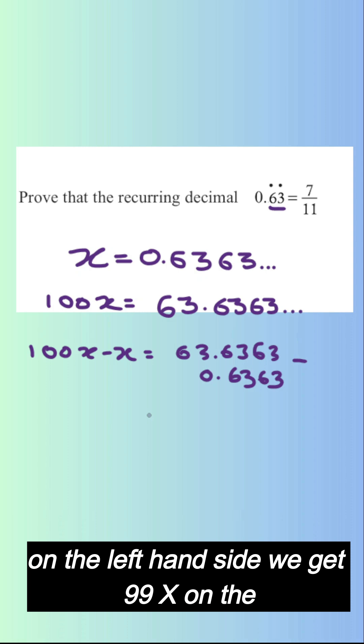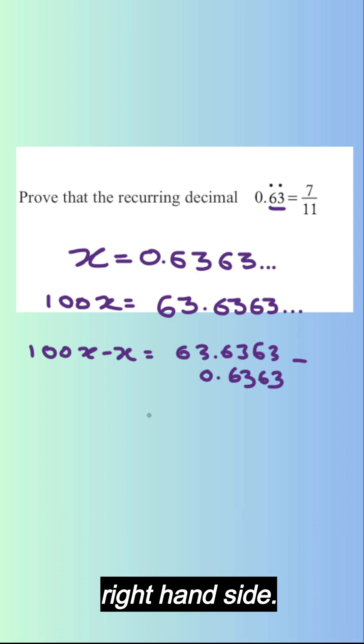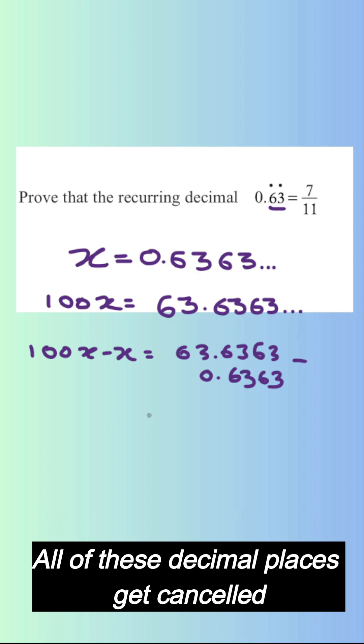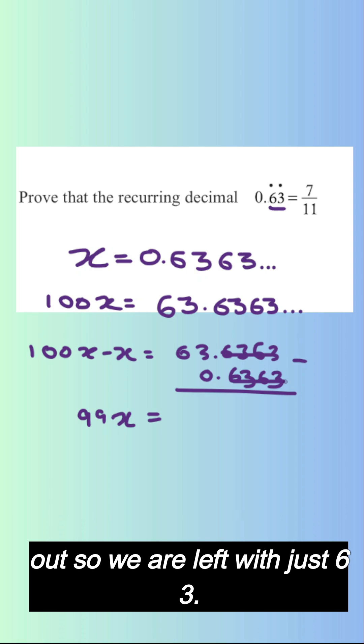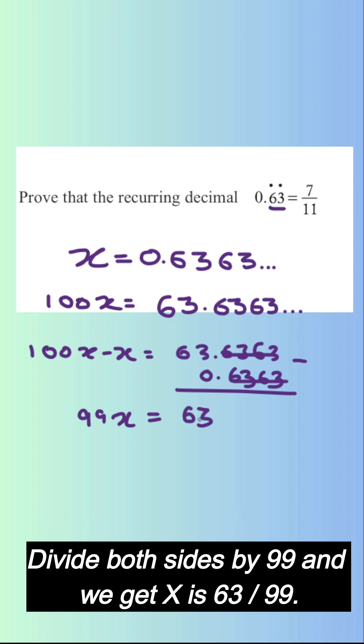On the left hand side we get 99x. On the right hand side all of these decimal places get cancelled out. So we are left with just 63. Divide both sides by 99 and we get x is 63 over 99.